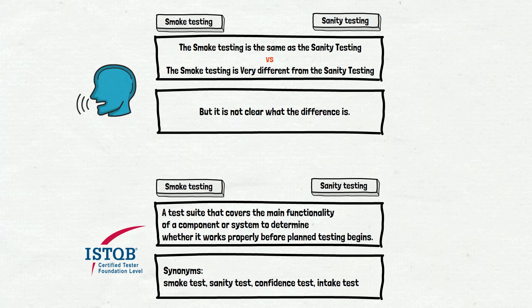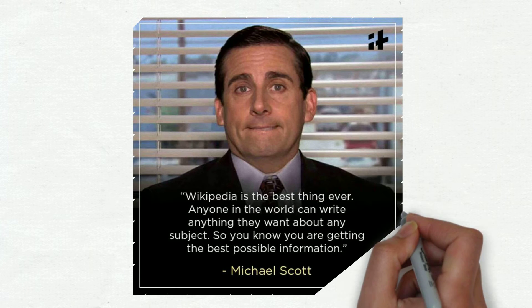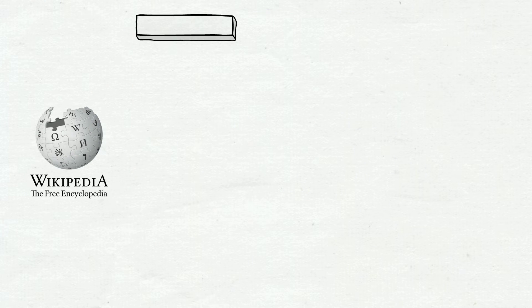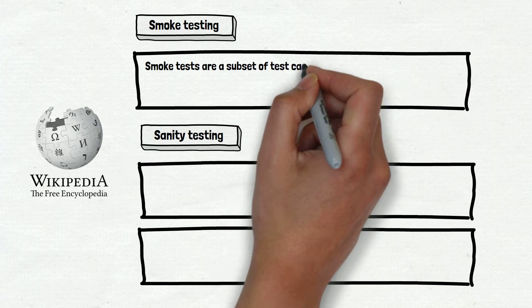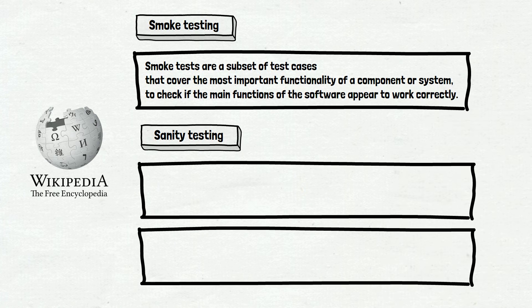On our site we continued this investigation and we went to our best friend in this kind of situation — Wikipedia. Yes, it's human language as well, but we decided to go with it rather than any other website. Wiki differentiates smoke and sanity testing. Let's check what it says. Smoke tests are a subset of test cases that cover the most important functionality of a component or system to check if the main functions of the software appear to work correctly. Basically, Wiki agrees with ISTQB.